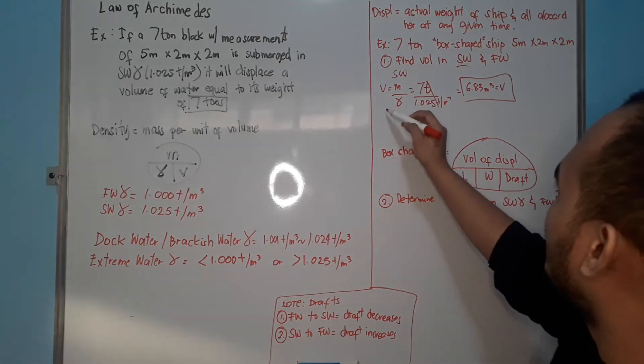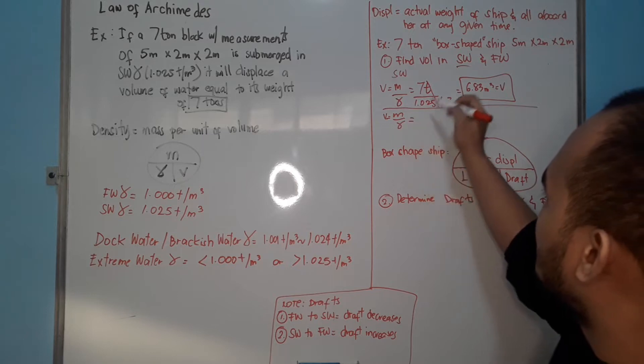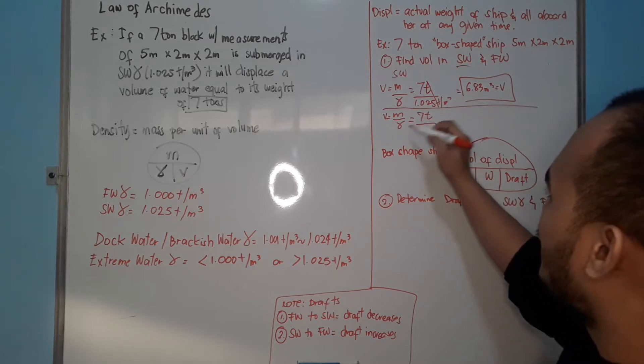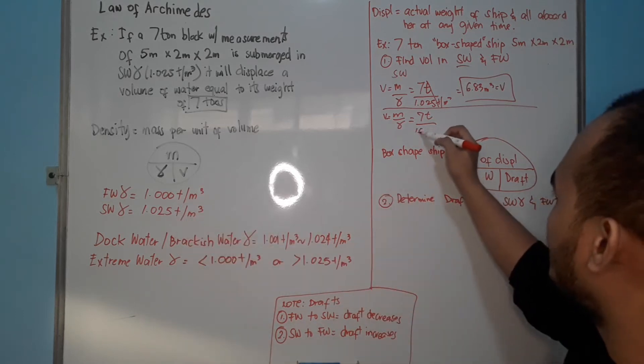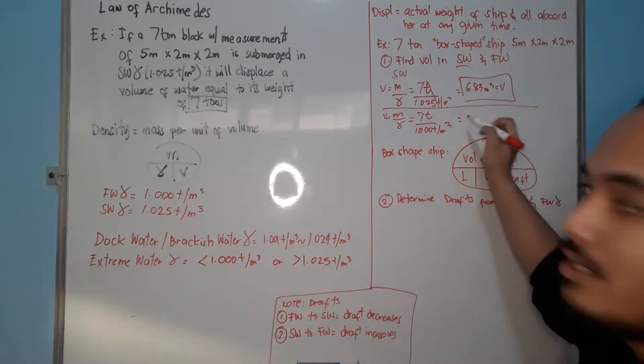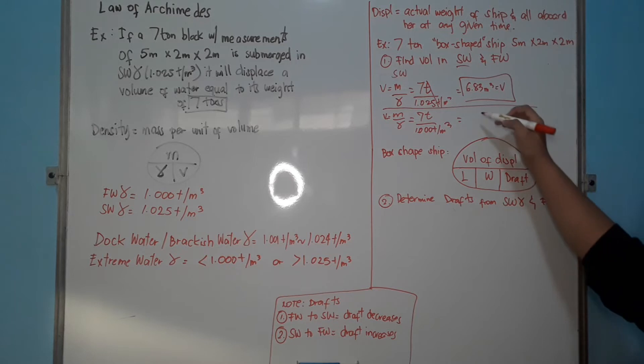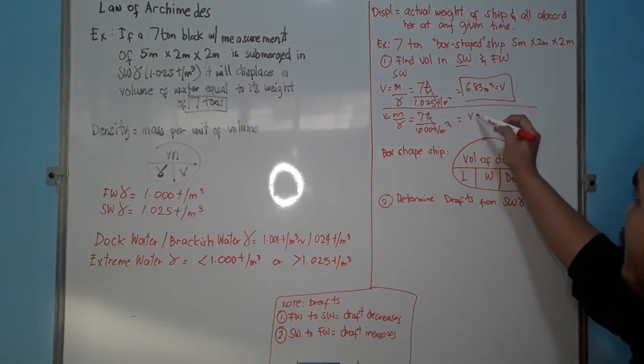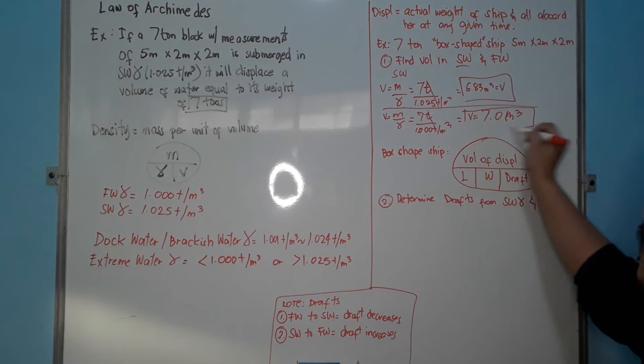Now we go with the fresh water. V equals, again, 7 tons divided by your density for fresh water. What's your fresh water, again, 1.000 tons per cubic meter. 7 tons divided by 1.000 equals, again, very basic, 7. So your volume will be 7.0. So, this will be our volume.